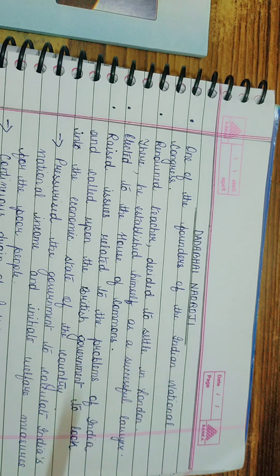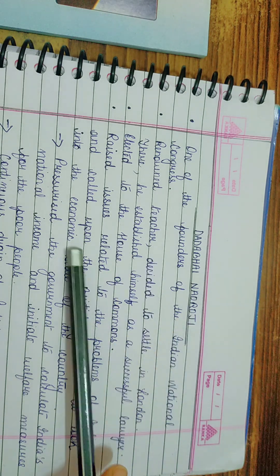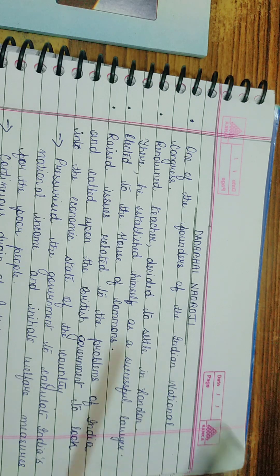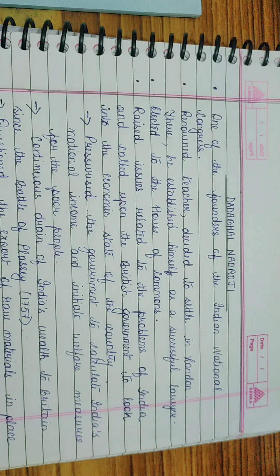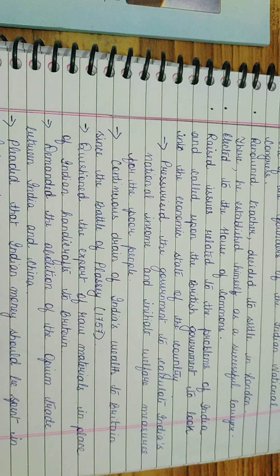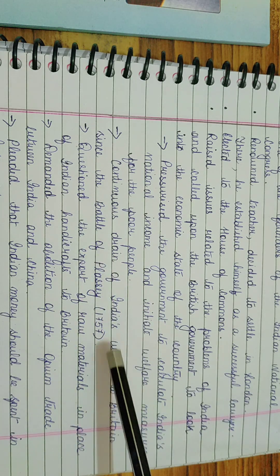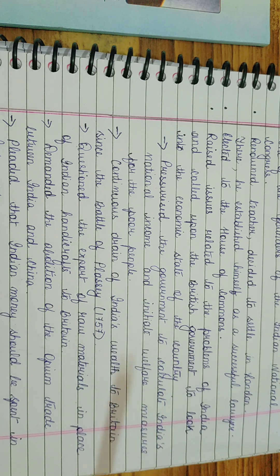India was becoming poorer. He pressurized the government to calculate India's national income and initiate welfare measures for the poor people. He also highlighted that since the Battle of Plassey, the 1757 battle, there was continuous drain of wealth from India to Britain. India's wealth was continuously drained to Britain, basically making Britain a richer country and India a poorer country.